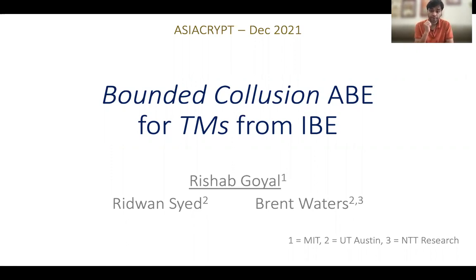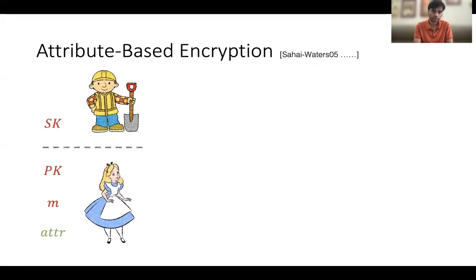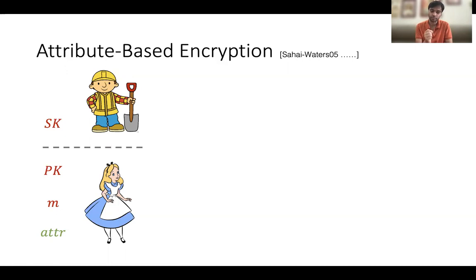Let's start by talking about attribute-based encryption. The notion of attribute-based encryption was originally defined in 2005 and is a powerful generalization of public encryption which allows fine-grained access over encrypted data. It can be understood via the following example. Suppose we have two parties Alice and Bob. Bob has some secret key, Alice has a public key, and Alice wants to encrypt the message — the substance of data m — under a set of attributes such that anybody who satisfies these attributes should be able to recover the message m from the encrypted data.